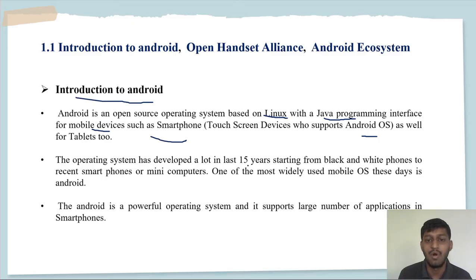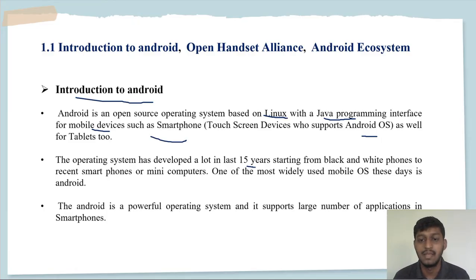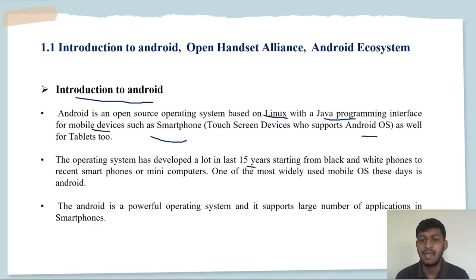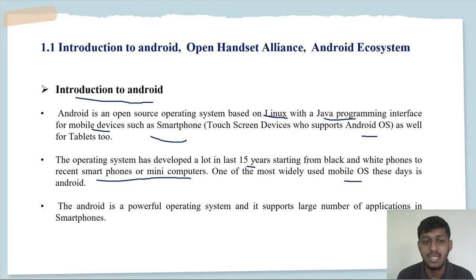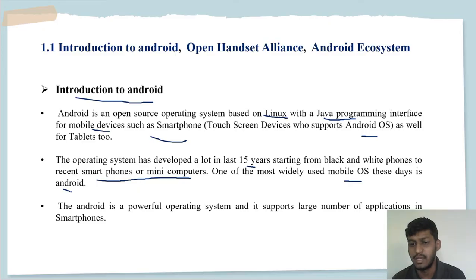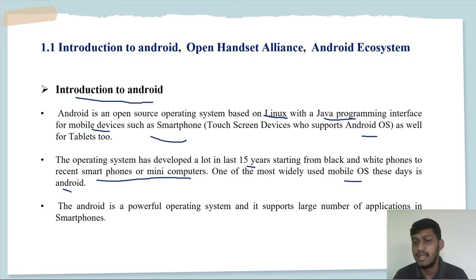The operating system has developed a lot in the last 15 to 20 years, and the market increased significantly. In earlier years, people had simple phones — black and white phones without Android. Now, recent smartphones and many computing devices are coming up with operating systems. One of the most widely used mobile operating systems today is Android. While iPhones are very costly, Android is affordable and simple to use.